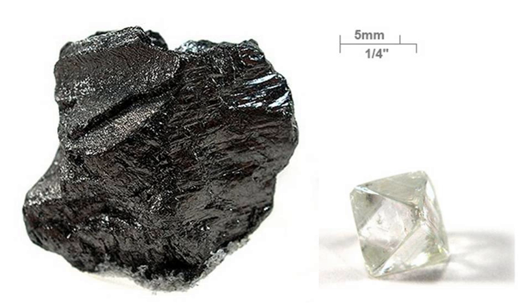Under some conditions, carbon crystallizes as lonsdaleite, a hexagonal crystal lattice with all atoms covalently bonded and properties similar to those of diamond. Fullerenes are a synthetic crystalline formation with a graphite-like structure, but in place of hexagons, fullerenes are formed of pentagons, or even heptagons, of carbon atoms. The missing or additional atoms warp the sheets into spheres, ellipses, or cylinders.